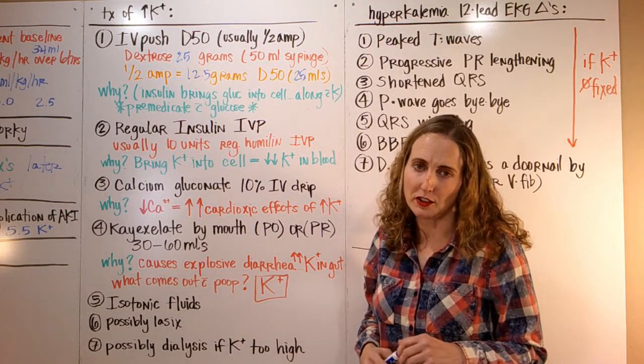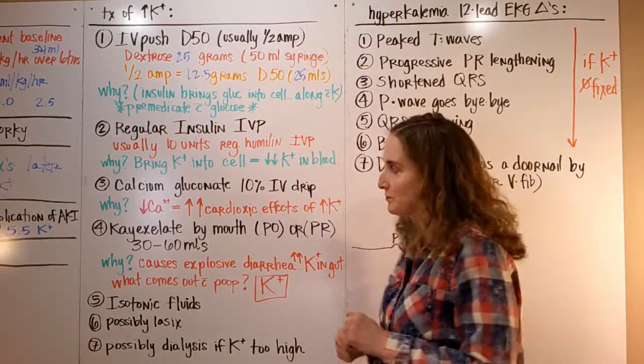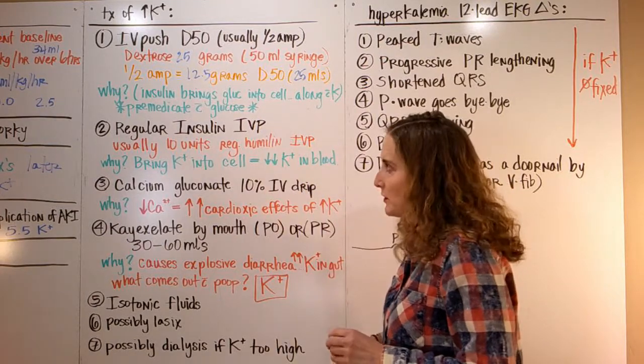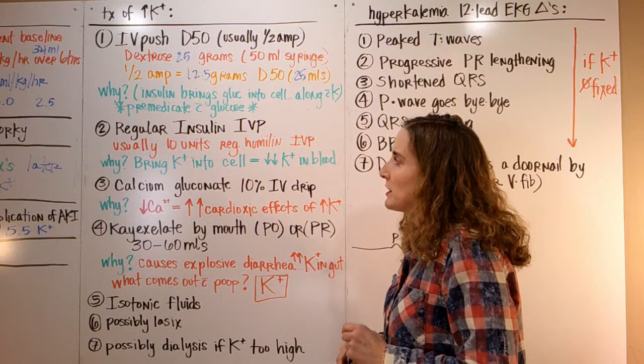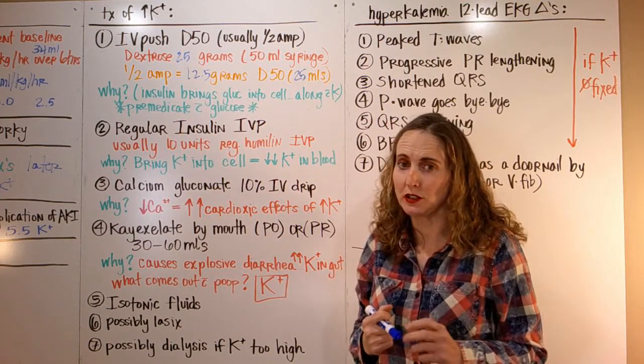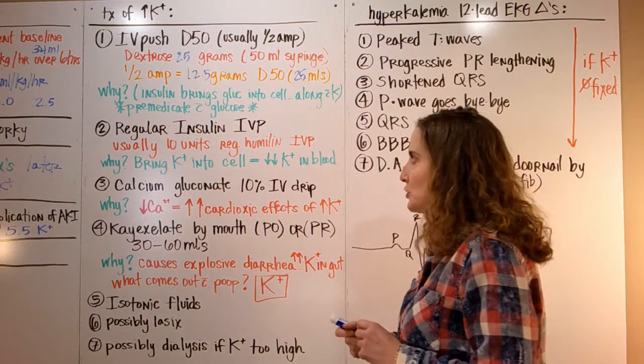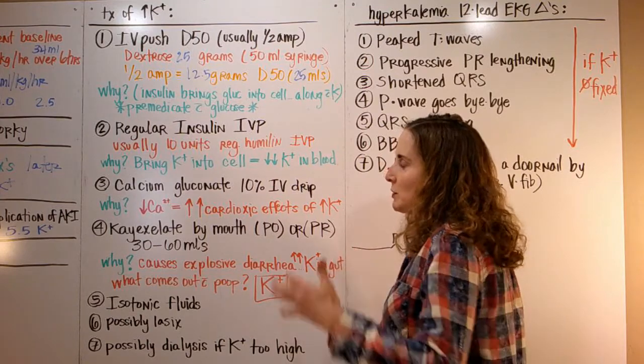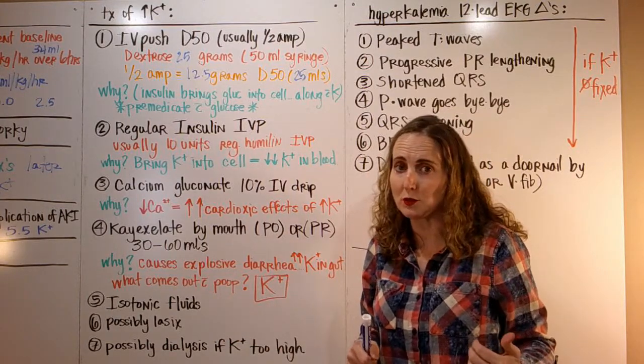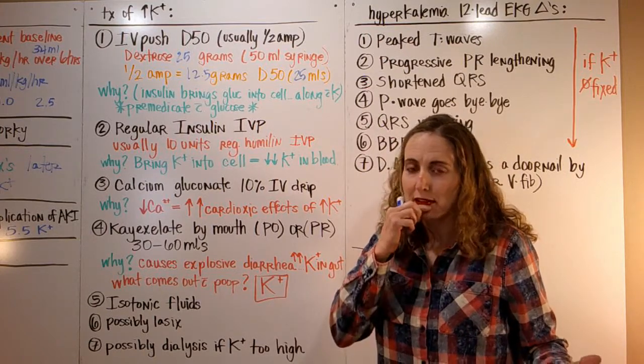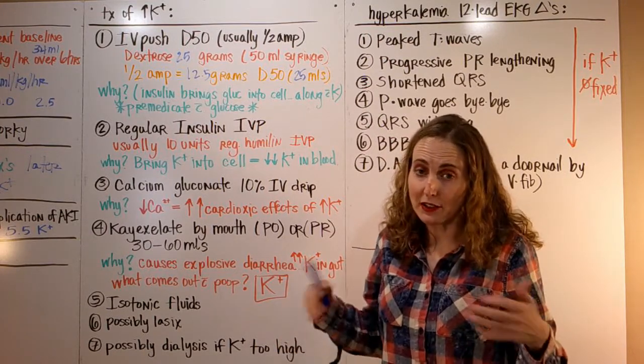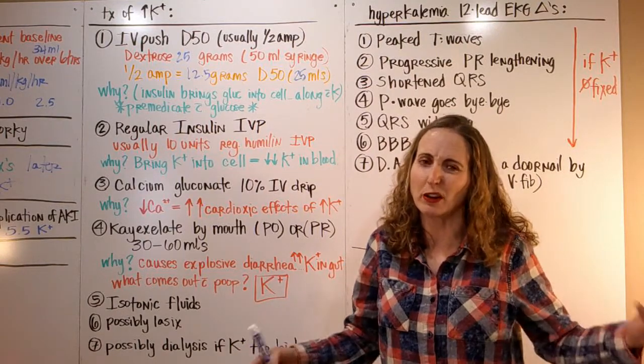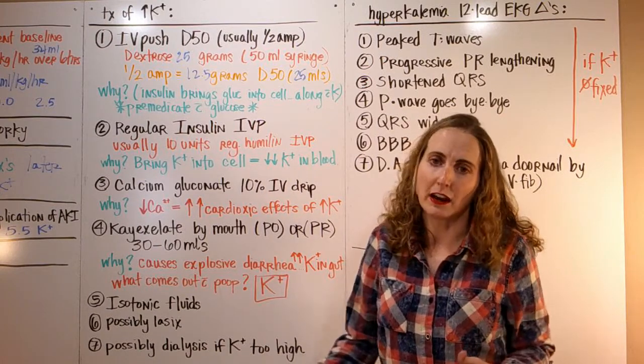We give regular insulin IV push, usually 10 units IV push for adults. That's regular Humulin or Novolin, whichever your department carries. Why? Because we're bringing the potassium from the serum back into the cell. If you remember from last week, Mr. Cell and Mr. Serum: before insulin, we got lots of potassium in the serum. If we give them insulin, we're going to pull it into the cell, get it out of the serum. If it's in the serum, it causes more trouble for the heart.